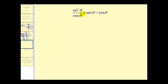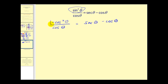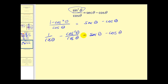For the next identity, we see sine squared theta, which leads us to perform a substitution using the Pythagorean identity, replacing it with one minus cosine squared theta, all over cosine theta, which should equal secant theta minus cosine theta. Because we're dividing by one term, we can break this into two fractions: one over cosine theta minus cosine squared theta over cosine theta. One over cosine theta equals secant theta, and the second fraction simplifies — the common factor of cosine theta reduces it to cosine theta. We now have verification.